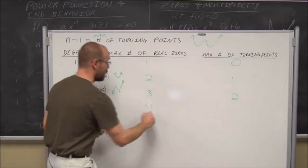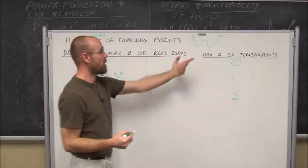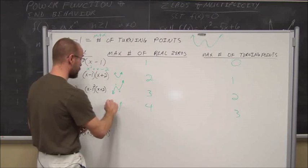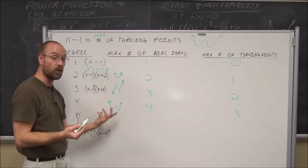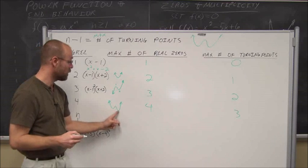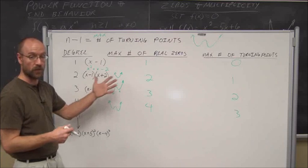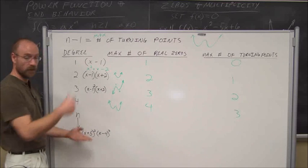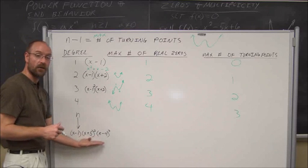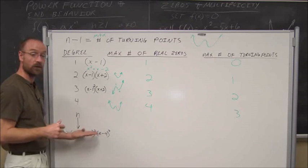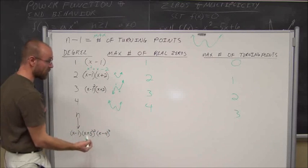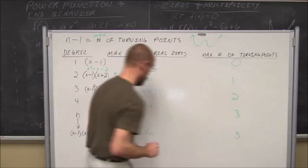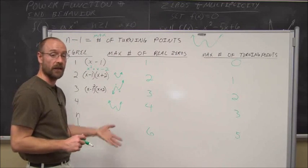A fourth degree polynomial would have at most 4 real zeros and 4 minus 1 equals 3 turning points maximum — one, two, three changes in direction. Looking back at the degree-6 example from before: at most 6 zeros and up to 5 turning points, though it actually had only 3 turning points due to its multiplicities.